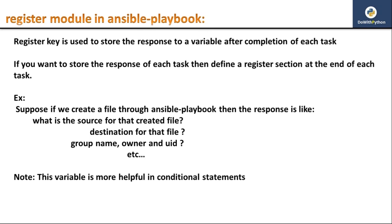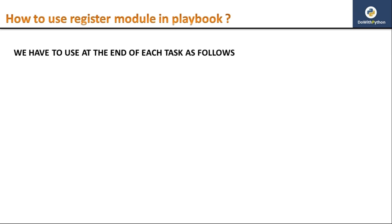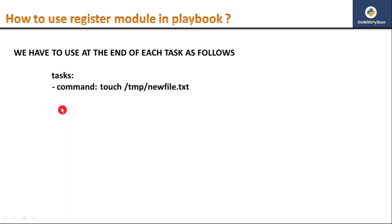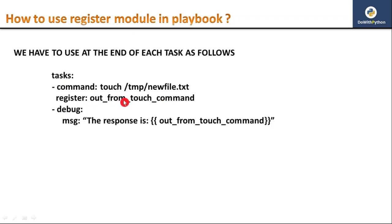So how to use the register module in your playbook — I'm going to take a simple example. Whenever you use the register module, at the end of each task you write the register directive. I'm starting directly with the tasks section. I'm taking a command module to create a file, and after creation it will give a response. To catch that response you use the register module and give it any variable name — just make sure it's not a module name or reserved keyword. To print this information on your command line you use the debug module.